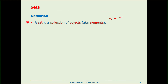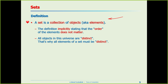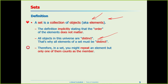Now take a look at the definition again. What does it imply? The first thing it implies is that order doesn't matter in a set. The second thing we can imply is that since everything in the universe is distinct, and math wants to simulate the universe, the objects or elements of a set should be distinct as well. If we repeat something in a set, it doesn't count — just one of them counts.